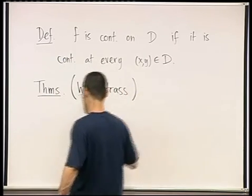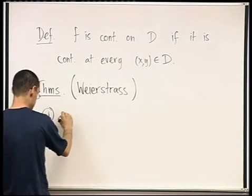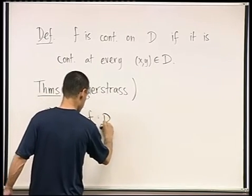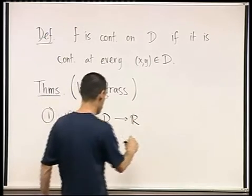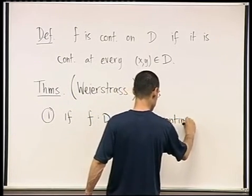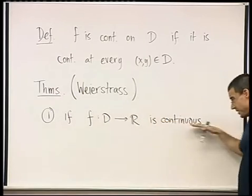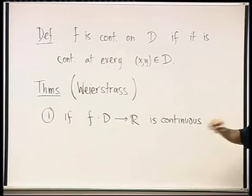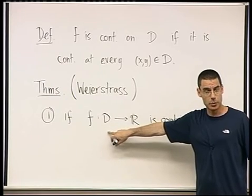The first two are called Weierstrass theorem. Weierstrass, and they say the following, so the first one says, if f from D to R is continuous, so a continuous function on a domain D, and we're going to require something about the domain. Do you remember what the requirement was in calculus one?